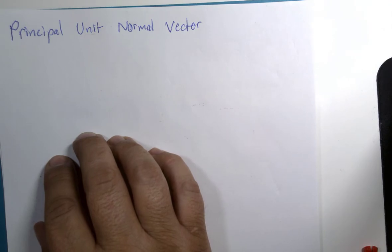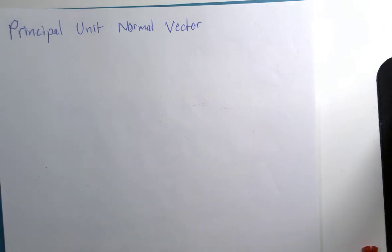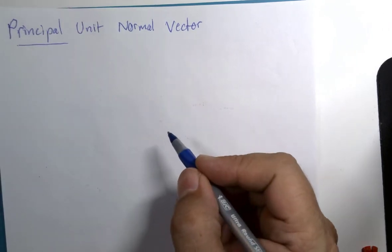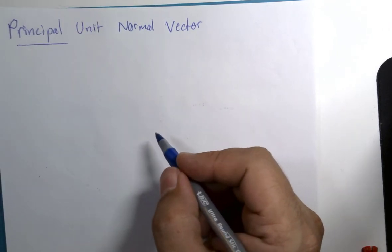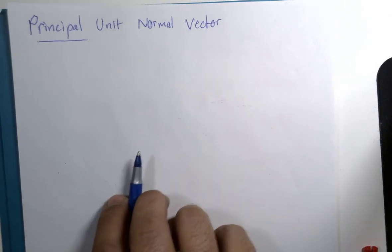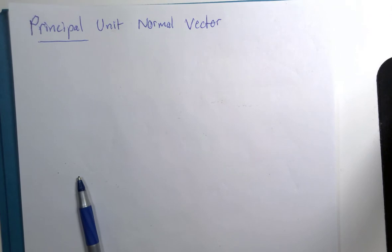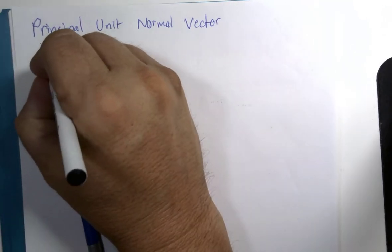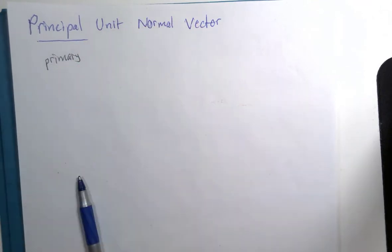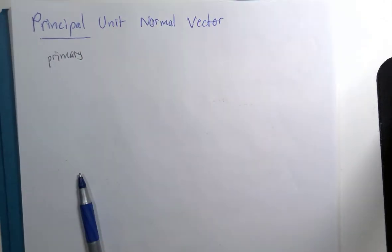The counterpart to the unit tangent vector is called the principal unit normal vector. The principal in this case would be the primary or the most important. That kind of implies there is more than one, which we will get to.